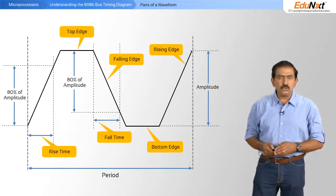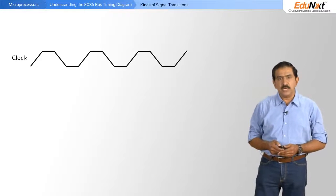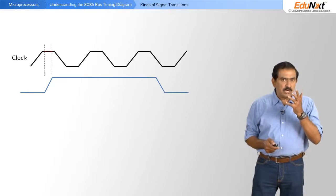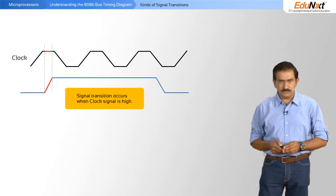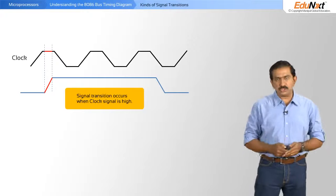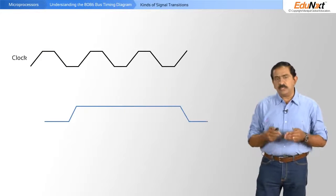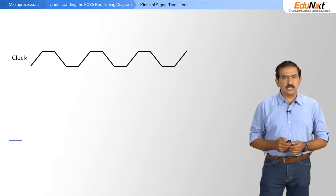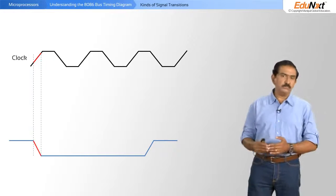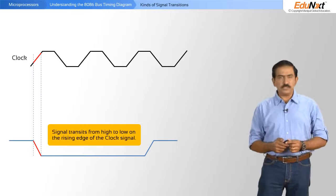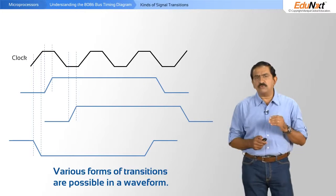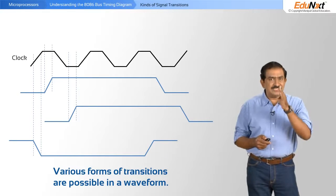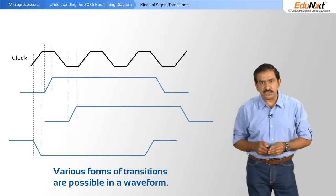So let's look at how to read a generic waveform. This is an example of a clock signal. A clock signal in this case shows a transition of low to high when the clock signal is at high. In another example, a signal is transitioning from low to high when the clock signal is low. A third example is a transition from high to low on the rising edge of the clock signal. So you have various forms of transitions that are possible in a waveform, and it's important for you as a hardware designer to really design it such that it meets the requirements as mentioned by the manufacturer.